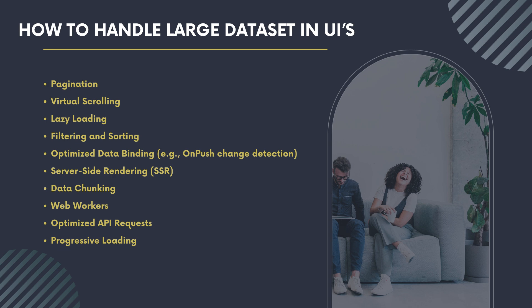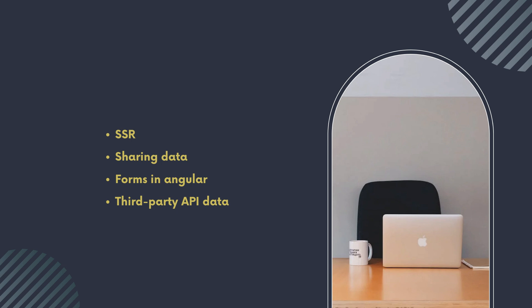For example, with 1000 records and 100 per page, it creates 10 pages. When clicking next page or a specific page number, data is fetched accordingly. This is essentially server-side pagination — fetching data from the server per page request.